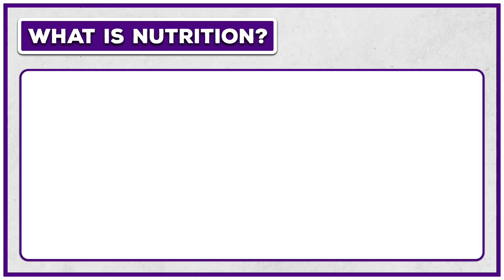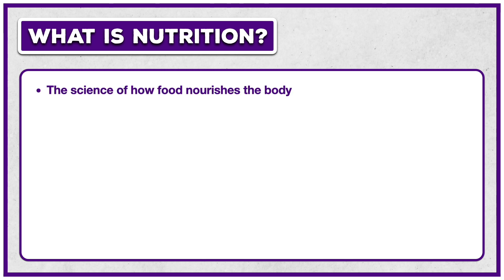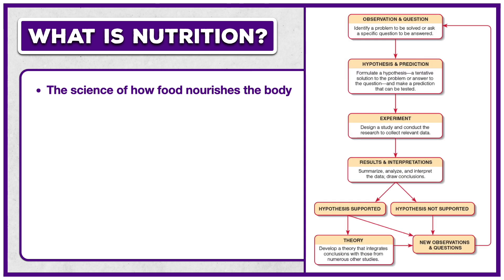The first thing we're going to do is define nutrition. After all, it's the title of the book we're working from, and it's the overarching theme for most of what's discussed in the next 10 plus chapters. Nutrition is defined as the science of how food nourishes the body. This means we rely on the scientific process and evidence to shape our nutrition knowledge, rather than leaning in to unsubstantiated claims and opinions.